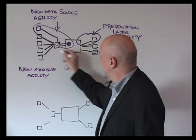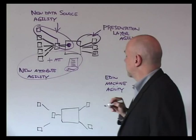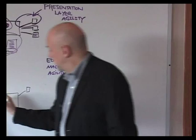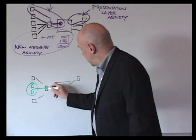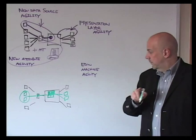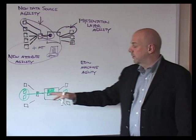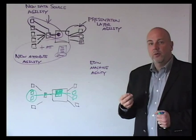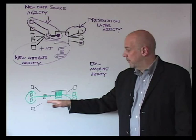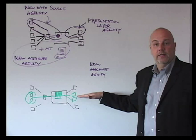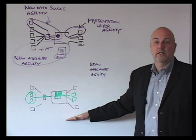EDW machine agility is the overall measure of being able to get a new subject area pushed in through stage, modeled into the warehouse, and through to related marts — from stage all the way to mart. How fast does my existing EDW allow me to bring in a new subject area? This is a people, process, and tools combined approach, and every piece along the way has to work in unison. The same skill set can then be applied to a new warehouse or a greenfield project. What's the overall EDW machine agility?